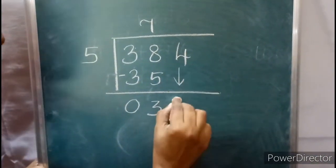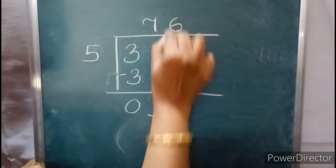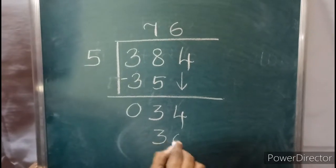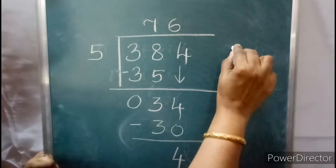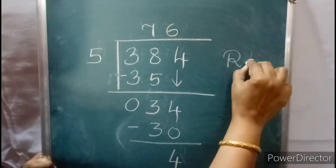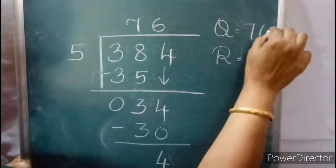Now take this 4. In the 5 table, 5 sixes are 30. What is the remainder? 4. Remainder equals 4, quotient equals 76.